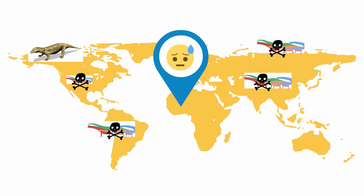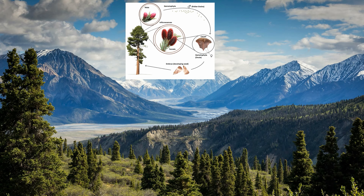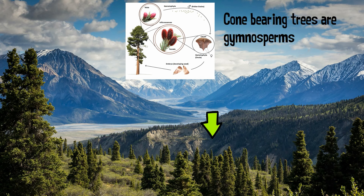The first birds appear and begin to scatter throughout the world. The dominant plants are cone bearing trees and plants. At the end of this era flowering plants begin to appear.